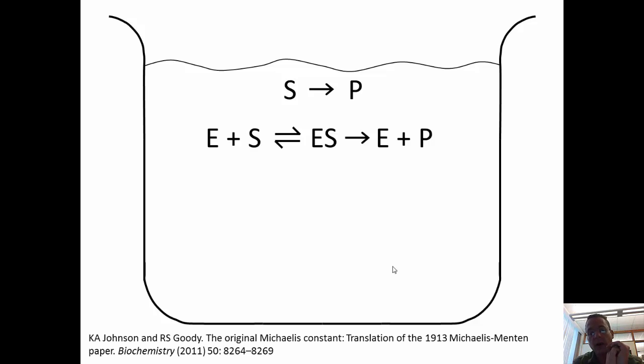The canonical model for this irreversible process, if we model that as an irreversible process, is called the Michaelis-Menten mechanism, or the Michaelis-Menten model. There's a lot of history here.